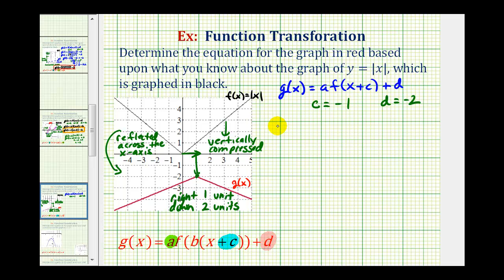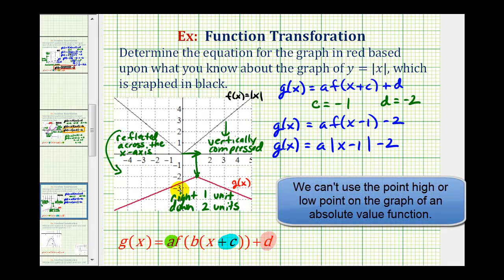So this gives us the function g of x equals a times f of the quantity x minus one minus two. Remember f of x is equal to the absolute value of x, so we can write this as g of x equals a times the absolute value of x minus one minus two. And now to determine the value of a, we'll select one point on the red graph and then solve for a.